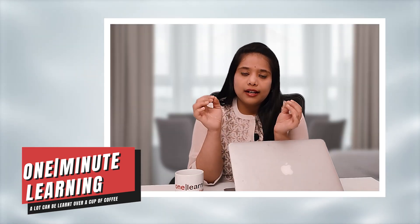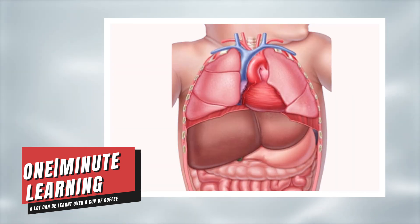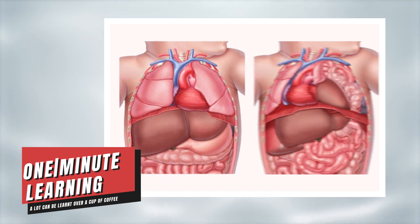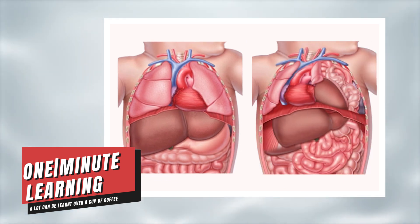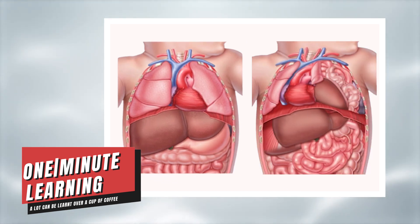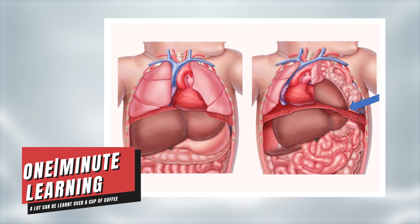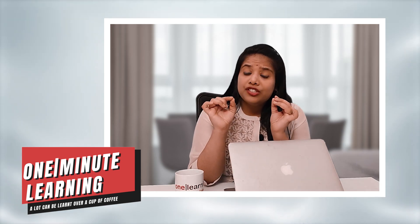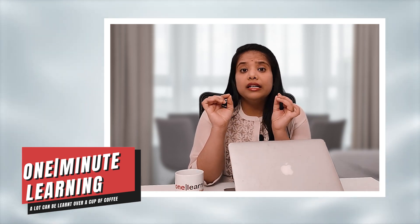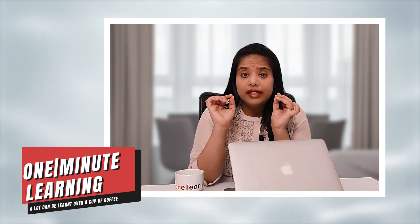Congenital diaphragmatic hernia occurs when the diaphragm muscle fails to close in prenatal development, and the contents from the abdomen — like the stomach, intestine, and liver — migrate into the chest through this hole. Diagnosing left congenital diaphragmatic hernia is easy when the stomach is involved.